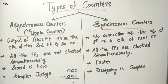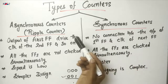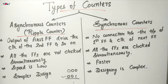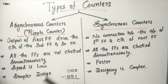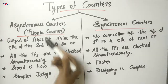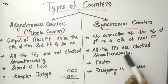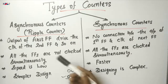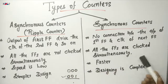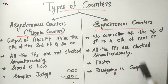In a synchronous counter, the single external clock pulse is connected to all the flip-flops simultaneously. There is no connection between the output of a particular flip-flop and the clock input of the next flip-flop. In an asynchronous counter, all the flip-flops are not clocked simultaneously, whereas in a synchronous counter, a single clock input is applied to all the flip-flops simultaneously, so all are clocked at the same time.